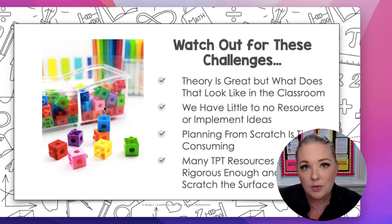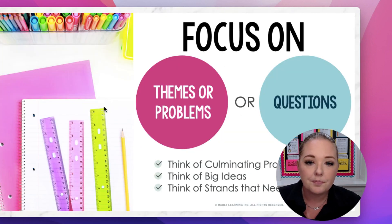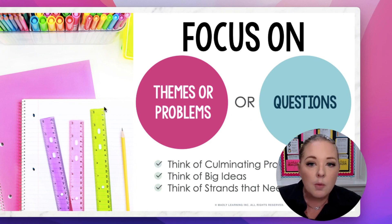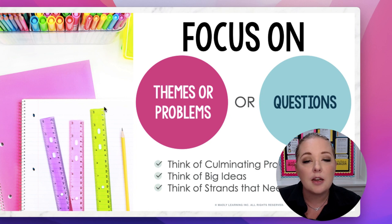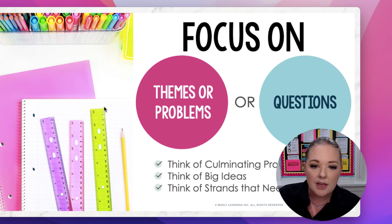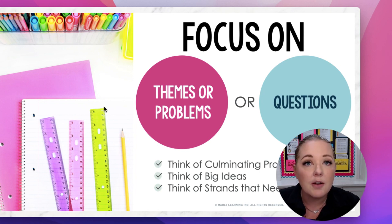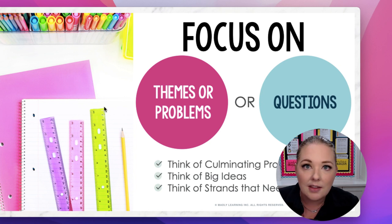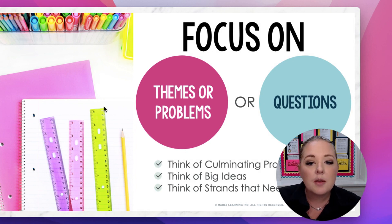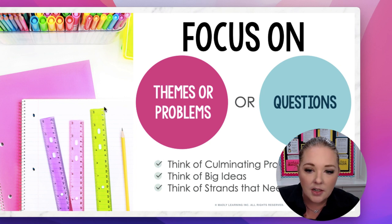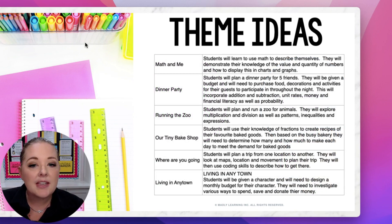So what are some things we can do to help plan and implement a spiraled approach in our classroom? First, we can start with the big ideas and focus on overarching questions, themes, and problems. We can think of a culminating project that would allow students to implement multiple strands in order to complete it — a project based in a realistic, real-world situation that students may encounter. We can also think of big ideas or questions that students may need to answer, and how strands help support one another.